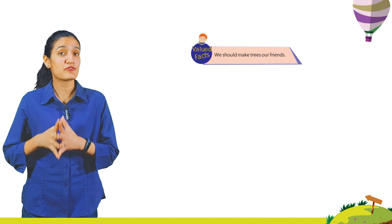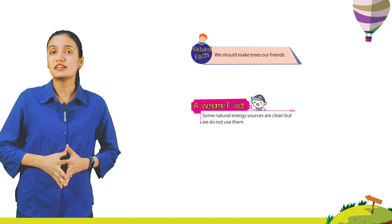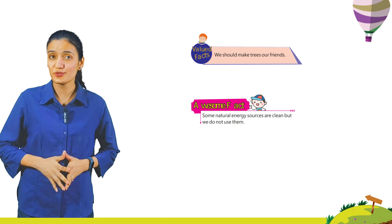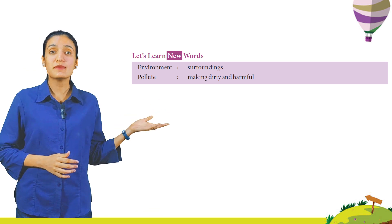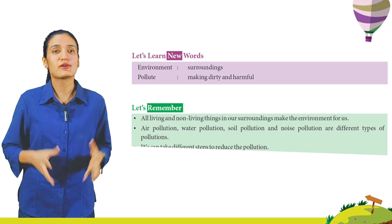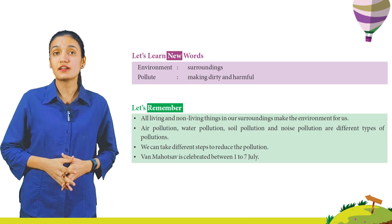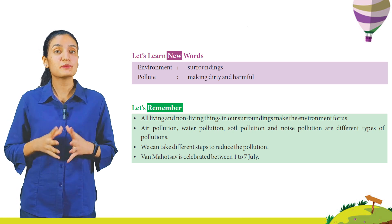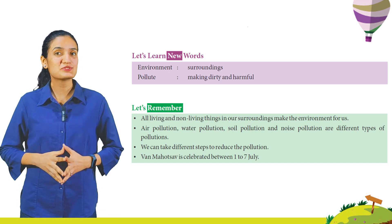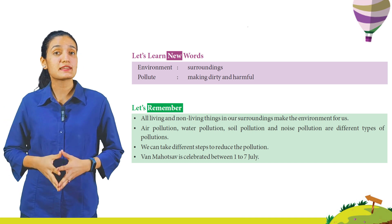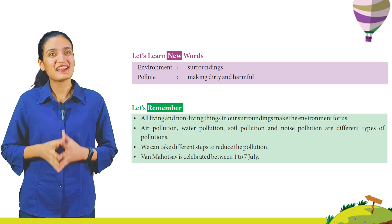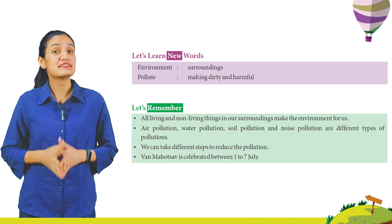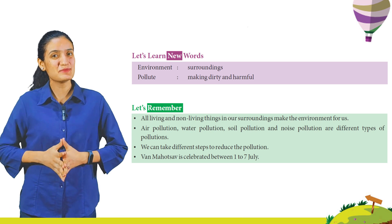We should make trees our friends. Some natural energy sources are clean but we do not use them enough. New words: environment means surroundings; pollute means making dirty and harmful. To summarize: all living and non-living things in our surroundings make the environment. Air pollution, water pollution, soil pollution, and noise pollution are different types of pollution. We can take different steps to reduce pollution. Van Mahotsav is celebrated between 1st to 7th July. I hope you liked this session — revise what you have learned, and we will meet again. Bye!